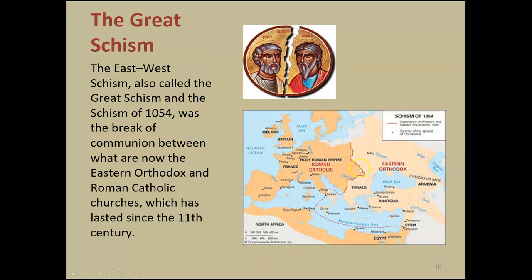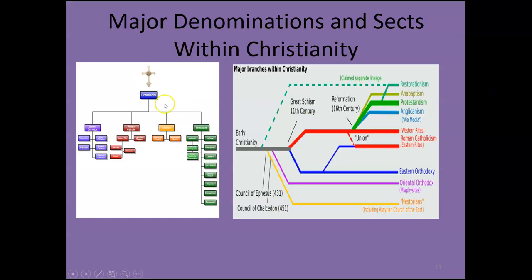In 1054, the church splits in two in what's called the Great Schism. There was debate over idols, methods of worship, and dogma, and this fight resulted in a split — the western part of Europe remaining Roman Catholic, and the eastern part becoming Orthodox, which spread into Russia and Eastern Europe. This schism has not been healed to this day. If you look at Christianity, there are essentially four major denominations: Eastern Orthodox, Roman Catholic, Anglican, and Protestant, with various subsets in between, each with its own story and historical antecedent.